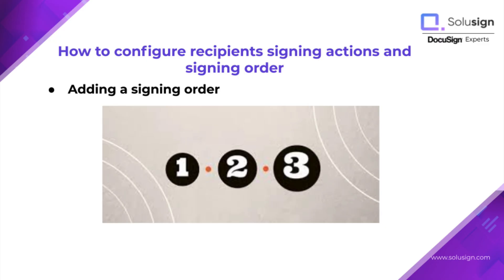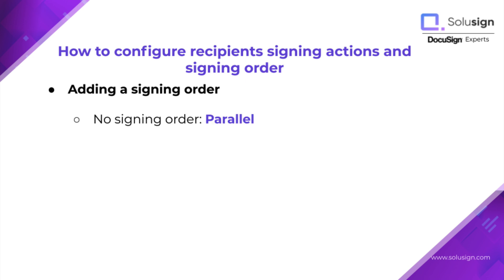If your envelope has more than one recipient, you can choose to set a signing order. The signing order lets you control the order in which your recipients will receive and sign your documents. If you don't add a signing order, then each recipient will receive the documents at the same time. Instead, you can set up a sequential signing order where each recipient receives the email notification once the previous recipient has completed their action.